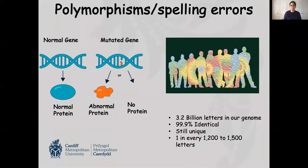These 3.2 billion bases that we have among humans — we are 99.9% identical to each other. So there is that much similarity, but each individual is still unique. The changes that happen between individuals we call polymorphisms, and you can think of these as some spelling errors that are there in our genome. Most of these spelling errors don't mean much, but sometimes they could be defining our health and disease.